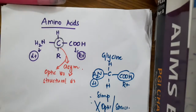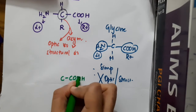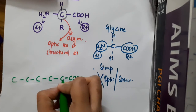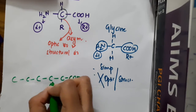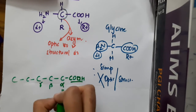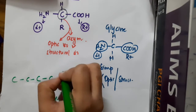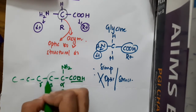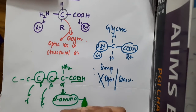Now for carbon classification: in an amino acid, the carbon atom just beside the carboxyl group is called the alpha carbon, the next is beta, then gamma. If an amine group is attached to the alpha carbon, it is called an alpha amino acid; if attached to the beta carbon, a beta amino acid; if attached to the gamma carbon, a gamma amino acid. Among all these, alpha amino acids are the most common.